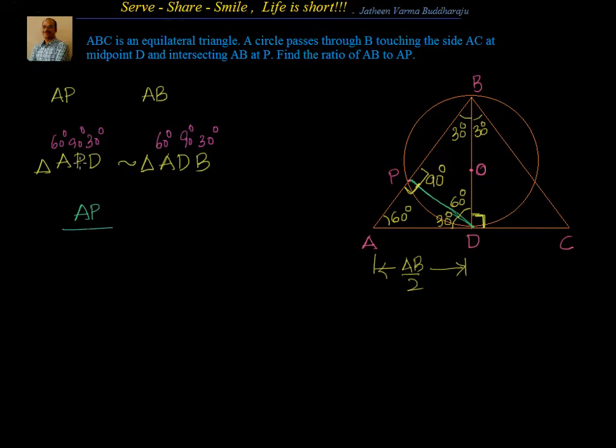So let me start with AP. AP goes from 60 to 90. So in the corresponding triangle, similar triangle, 60 to 90 is given by AD. And we are interested in finding out what is AB. So AB is going from 60 to 30. So 60 to 30 I have AD. So I will have AP by AD equal to AD by AB. Now if you cross multiply, you will see that AD square equal to AP into AB.